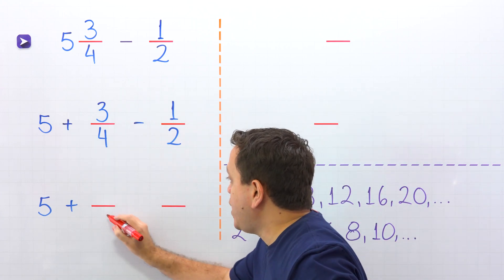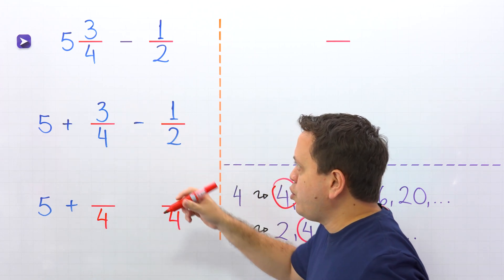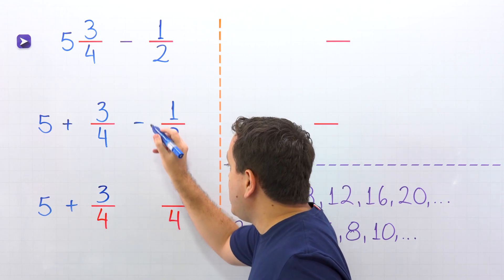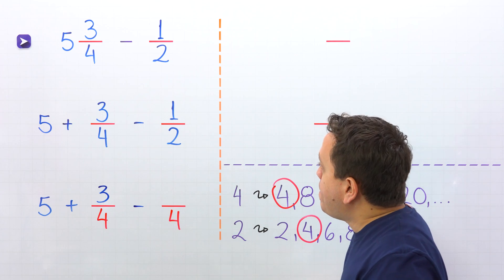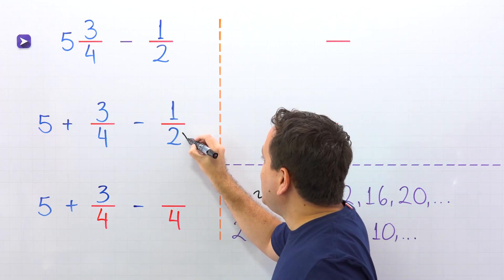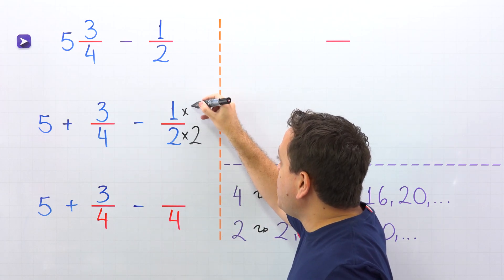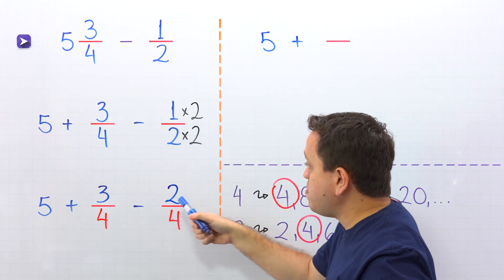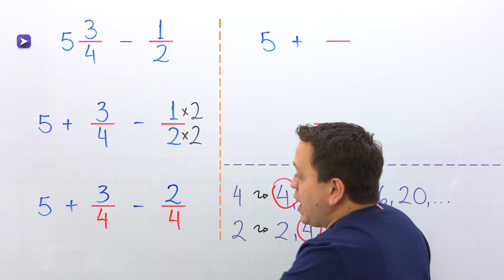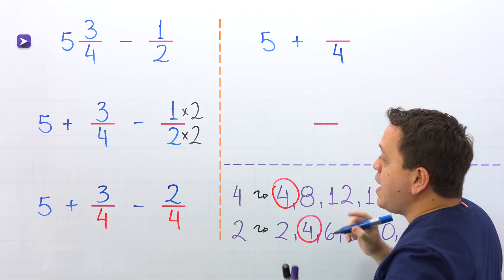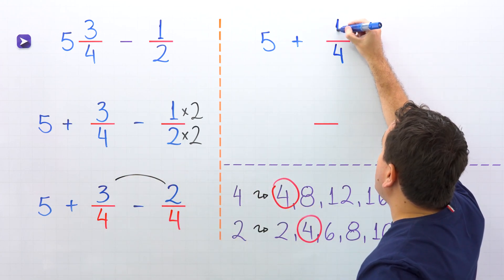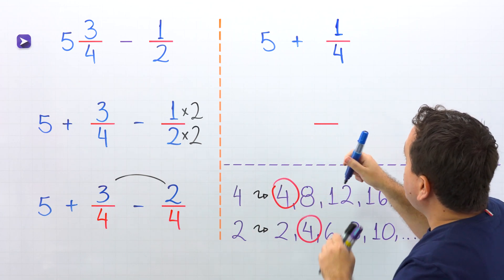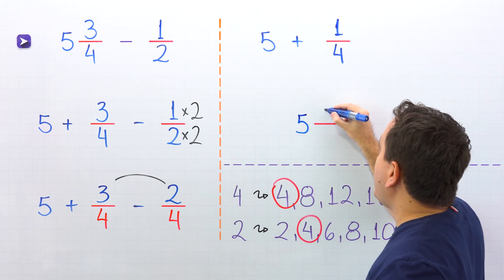For each fraction, we need an equivalent fraction with a denominator of 4. Starting with 3 fourths — this fraction already has a denominator of 4, so we don't need to make any changes; we just keep 3 fourths. Then comes the minus sign. For 1 half, by what number should we multiply 2 to get 4? By 2, because 2 times 2 gives us 4. Whatever we do to the bottom, we must do to the top, and 1 times 2 gives us 2. Now, 3 fourths minus 2 fourths — these two fractions have the same denominator, 4, so we subtract the numerators, and 3 minus 2 gives us 1. Here we have the sum of a whole number and a proper fraction, which is the definition of a mixed number. So finally, we rewrite the sum of 5 and 1 fourth as the mixed number 5 and 1 fourth.